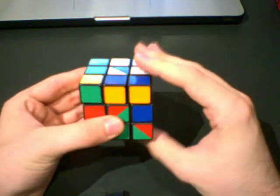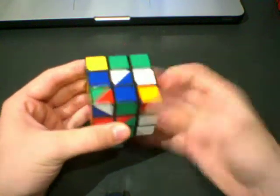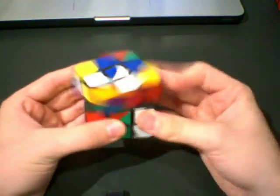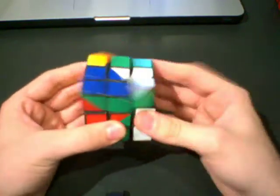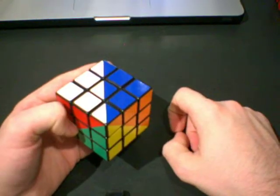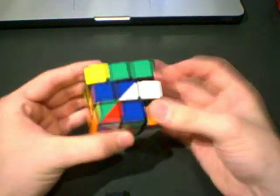R, U, R', U - and do that five times. R, U, R', U, that's twice. R, U, R', U, that's three times. R, U, R', U, four. R, U, R', U, five. And it's turned around. This algorithm is really easy.